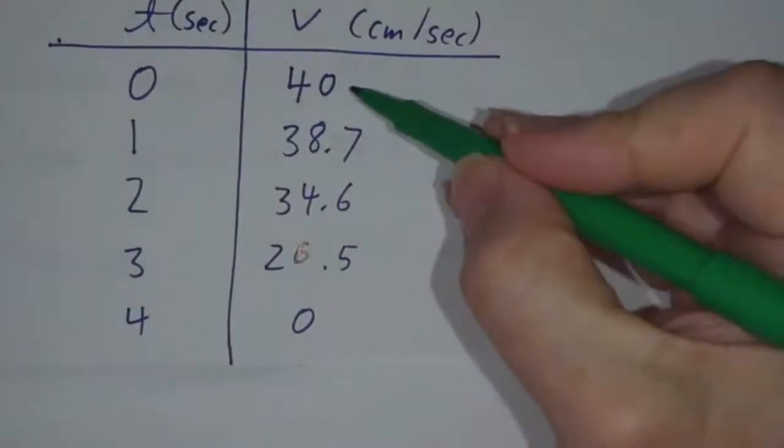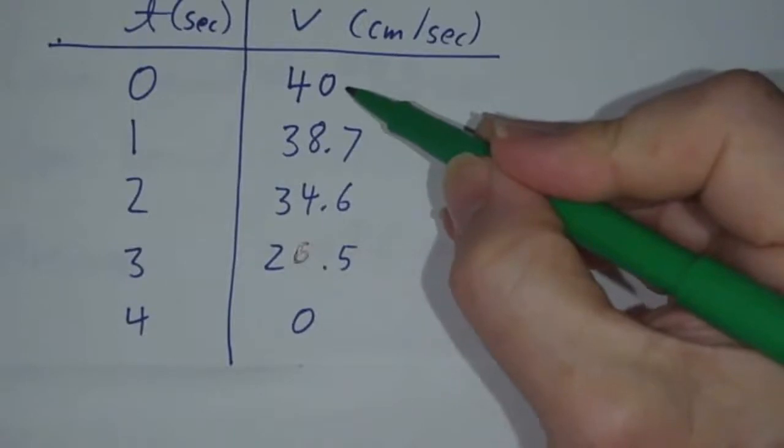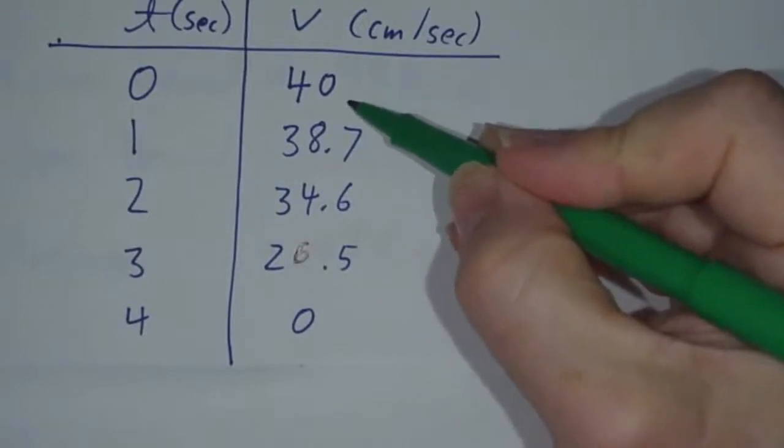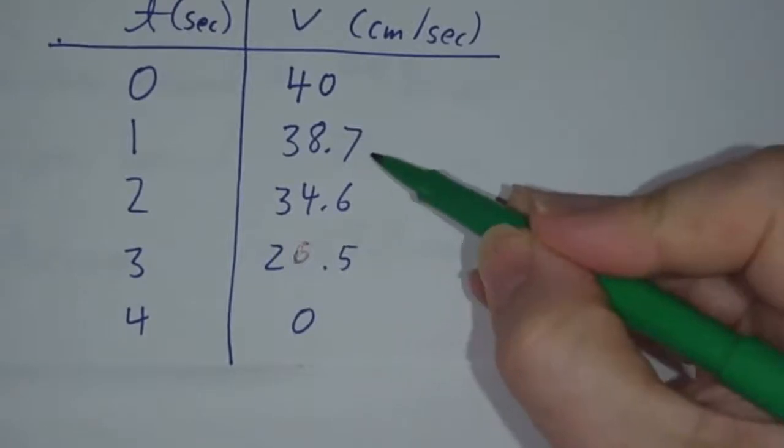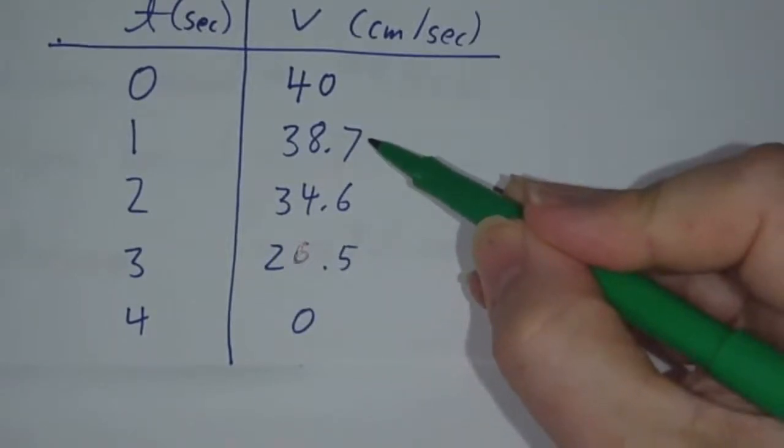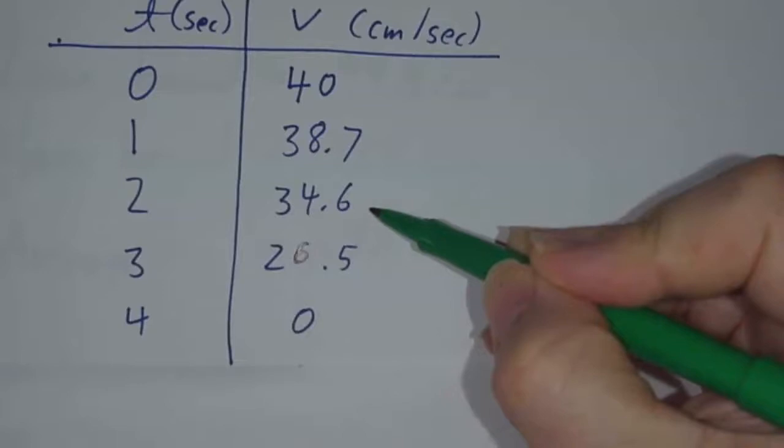We know it's slowing down. In the first second, it's going at a speed somewhere between 40 and 38.7 centimeters per second. In the second second, it's going somewhere between 38.7 and 34.6.